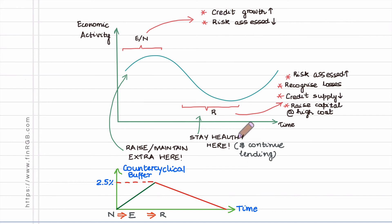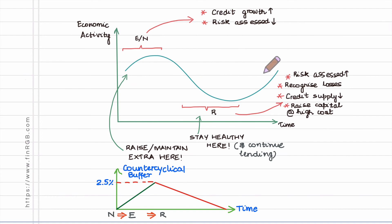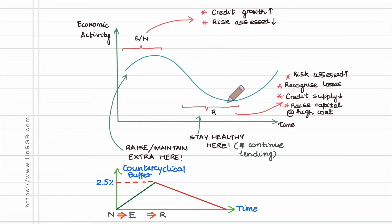Overall, the counter cyclical buffer — a requirement which increases during the expansionary period and gets relaxed during the recessionary period — helps to reduce the amplitude of the credit cycle and helps to raise capital at a time when it is cheaply available, to ensure financial stability during a time when capital is scarce.